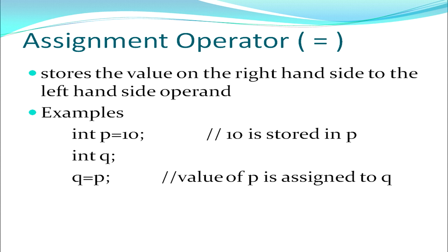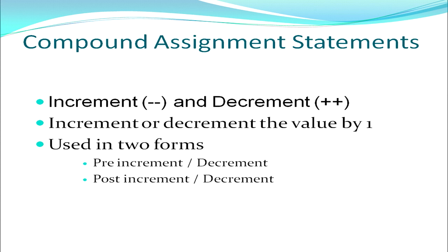Next we move on to the assignment operator, which we have used in previous examples also. It stores the value on the right-hand side of the operator into the left-hand side operand. For example, the value 10 on the right-hand side is stored in p on the left-hand side. Similarly, the value of p is assigned to q which is on the left-hand side.